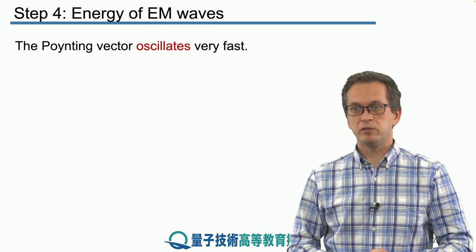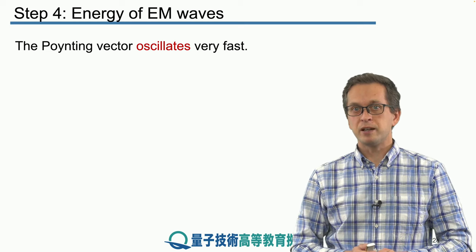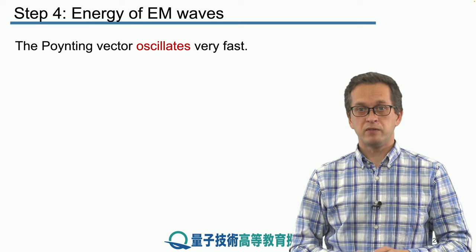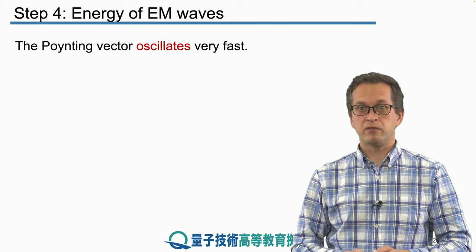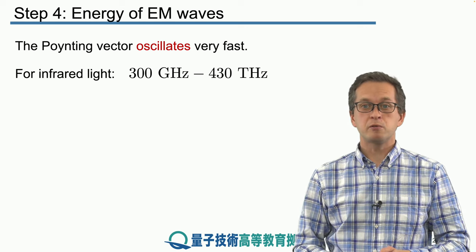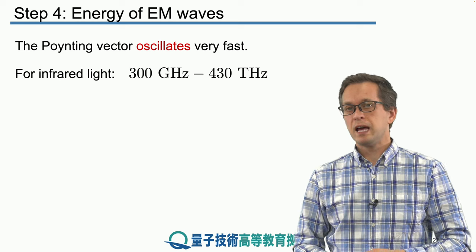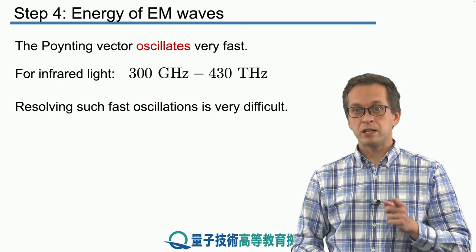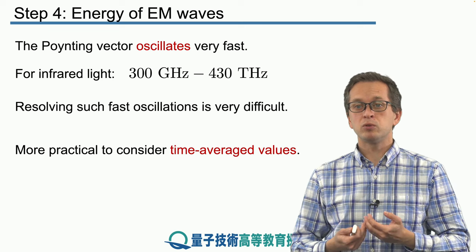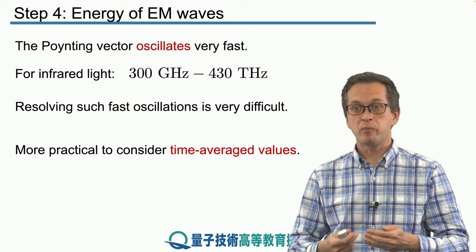Now, can we measure this quantity? The problem with these electric and magnetic fields is they oscillate extremely fast, which means the Poynting vector also oscillates very fast. For example, if you consider infrared light, which is anywhere in the range of 300 gigahertz to 430 terahertz, these oscillations are extremely fast and there is no technology on Earth that can actually resolve such fast oscillations. So what we are happy with is simply to do a time average of the Poynting vector, or the time average of the power per unit area.